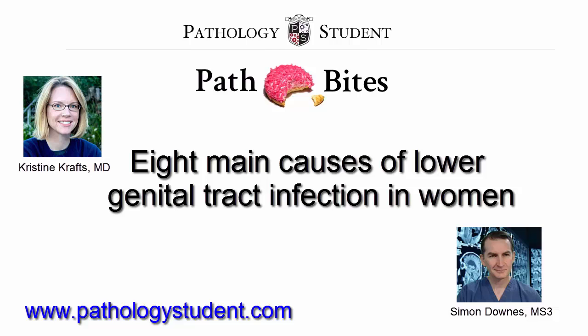Ureaplasma urealyticum and Mycoplasma hominis are less common but may cause premature labor. Chlamydia trachomatis is usually limited to the cervix but may ascend to the uterus and fallopian tubes.